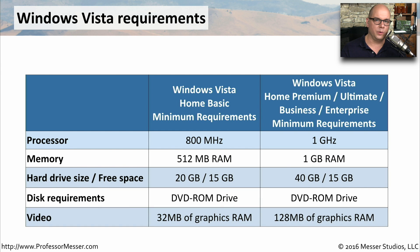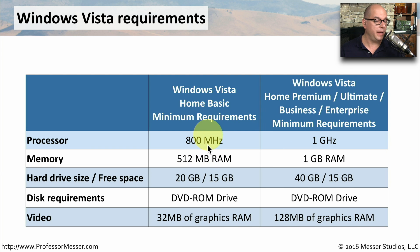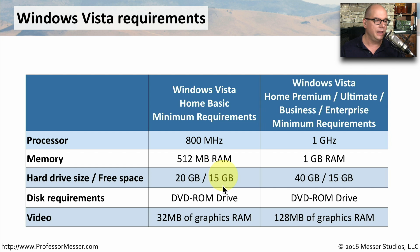There are two different sets of hardware requirements for Windows Vista: one for Windows Vista Home Basic, and one for all of the other editions. Windows Vista Home Basic requires an 800 megahertz processor, 512 megabytes of memory, at least a 20 gigabyte hard drive with 15 gigabytes of free space, a DVD-ROM drive, and 32 megabytes of graphics RAM in your video adapter.